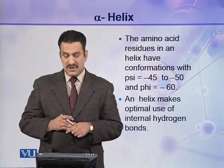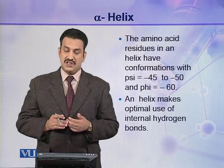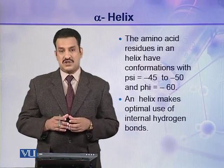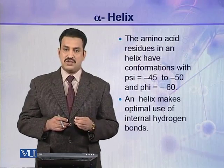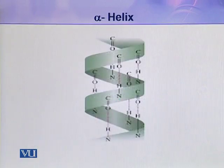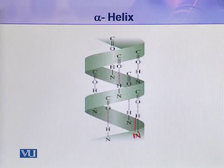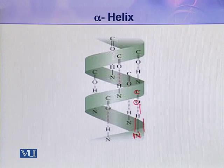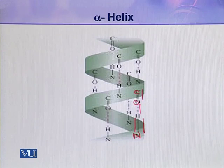The helix makes optimal use of internal hydrogen bonds, and by using the maximum potential of hydrogen bonding, this structure becomes very stable. Almost all amino acids in the helix are hydrogen bonded with other amino acids. As seen in the picture, a hydrogen bond is established between the amide hydrogen on the nitrogen and the carbonyl oxygen on the carbon, linking two amino acids together through hydrogen bonding.